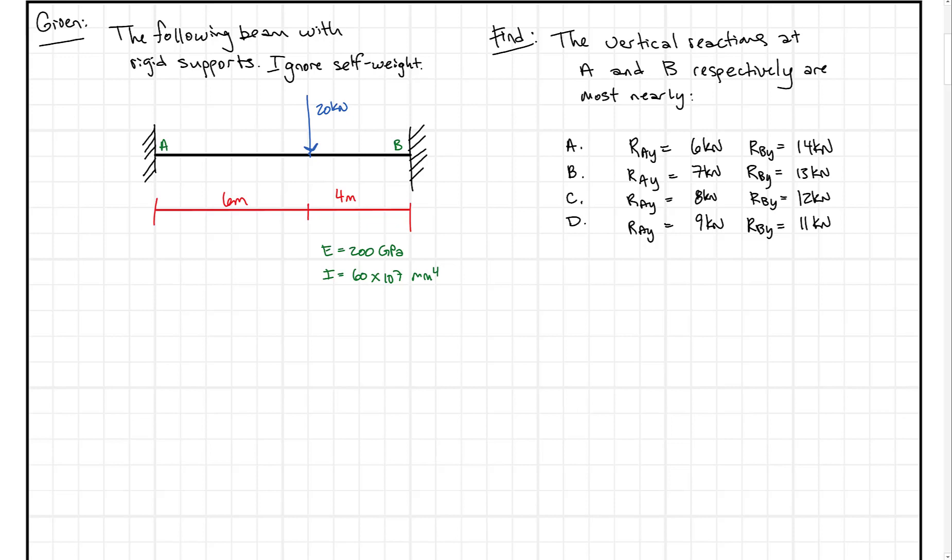I have some students that recently were studying for the FE exam and came across a problem like this, where all you have to do is solve for the vertical reactions at A and B. It seems like an easy enough problem, but when you get into the details it becomes a little bit more challenging.